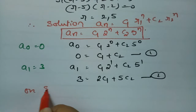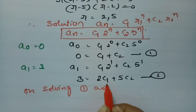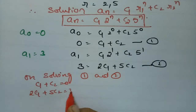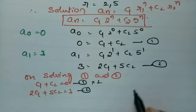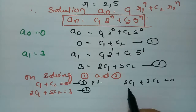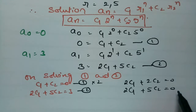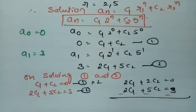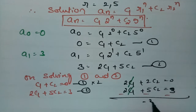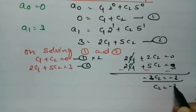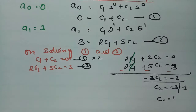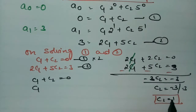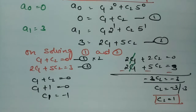On solving equations 1 and 2: Equation 1 is C1 + C2 = 0, equation 2 is 2C1 + 5C2 = 3. Multiplying equation 1 by 2 gives 2C1 + 2C2 = 0. Subtracting from equation 2: 3C2 = 3, so C2 = 1. Substituting back into equation 1: C1 + 1 = 0, so C1 = -1.